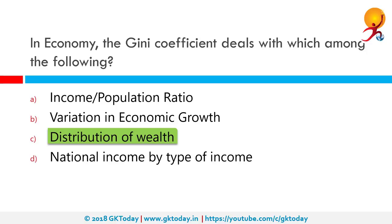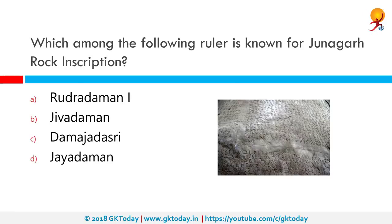Which among the following rulers is known for the Junagadh rock inscription? The correct answer is Rudradaman I. The Junagadh rock inscription of Rudradaman is considered an early example of chaste Sanskrit written in the mid 2nd century AD. It mentions that one of Chandragupta Maurya's governors, Pushyagupta, was responsible for building a dam on Sudarshana Lake near Girnar in Kathiawar. Another inscription of Skanda Gupta tells us this dam was repaired during his reign, almost 800 years after it was built.